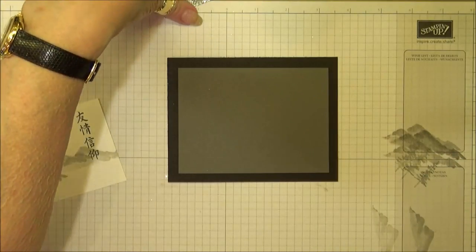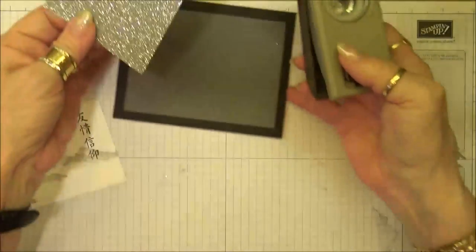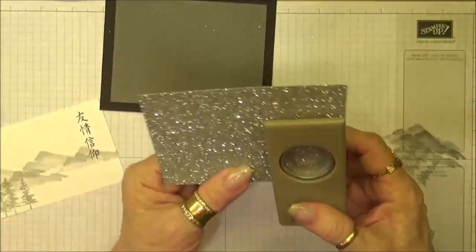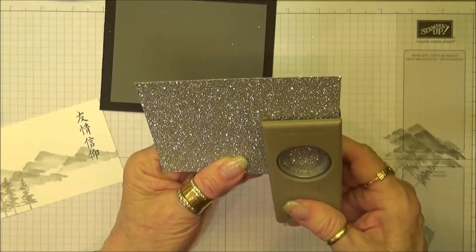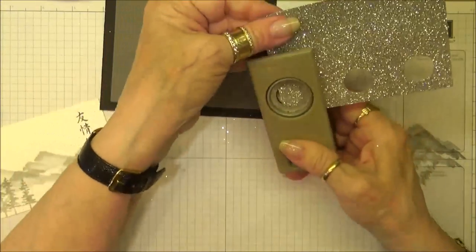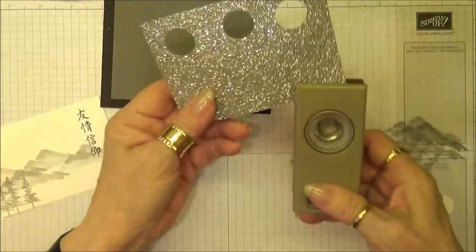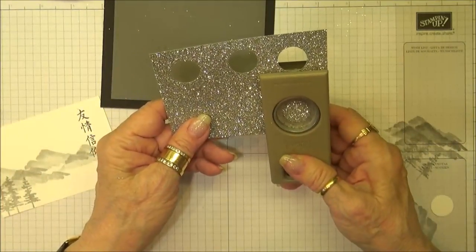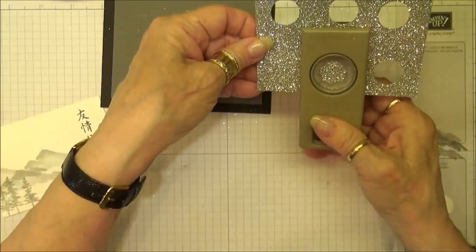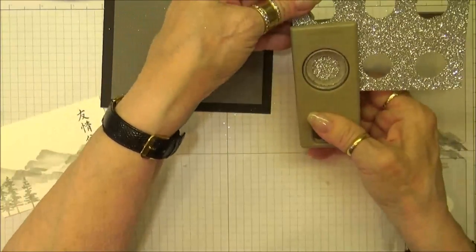Now I'm going to take my three-quarter inch circle punch and punch out holes along the bottom of the paper. I'm going to do this at the top also so we have holes punched equally across the page.